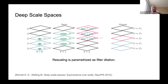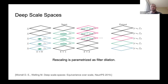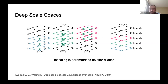In 2019, Daniel Worrall from the University of Amsterdam and colleagues proposed Deep Scale Spaces. They demonstrated that if you consider rescaling by an integer factor — downscale by two, then two again, etc. — instead of rescaling the filter you can use dilation. You take a 3×3 filter and to make it bigger, you put zeros between each value, making it a 5×5 filter. Dilation is implemented in all modern deep learning frameworks, so this can be easily implemented.